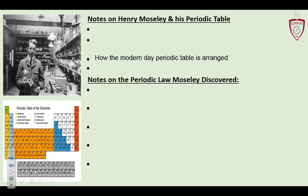If you start with the simplest atom, it has one proton; the next has two — it makes sense. And beautifully, there are no more gaps, partly because Moseley did this about 20 years after Mendeleev, and the elements Mendeleev hadn't discovered yet had since been found. It's also based on a whole number system, which makes it easier to predict.